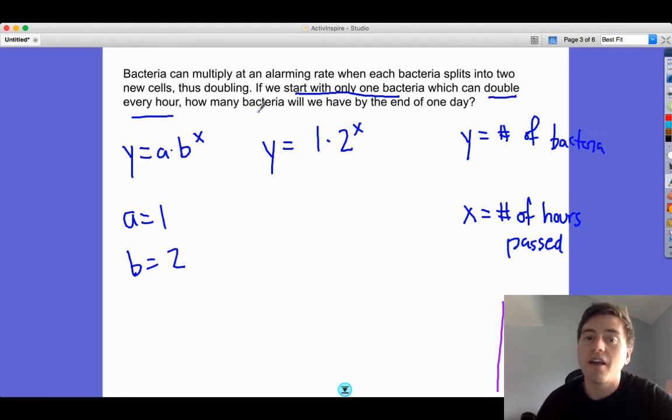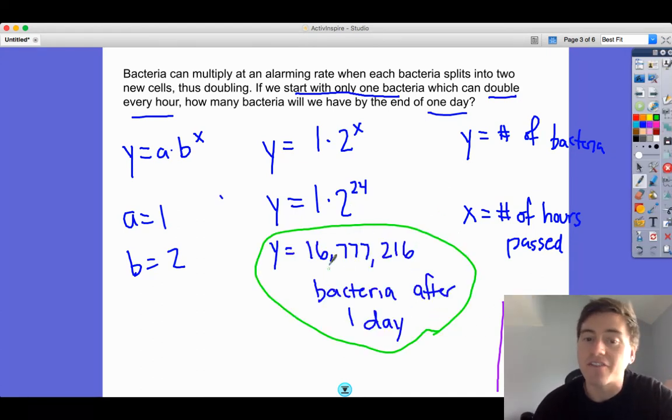How many bacteria at the end of one day? That's a time. It says number of hours passed, so one day is 24 hours. We'll say 1 times 2 to the 24. Plug that in your calculator and it tells me I have 16,777,216 bacteria after one day, if it's doubling every hour for 24 hours, even if we start with one.